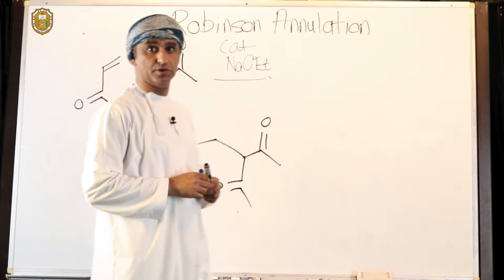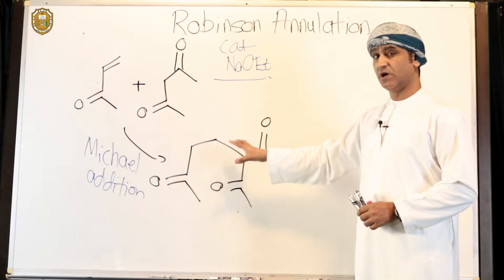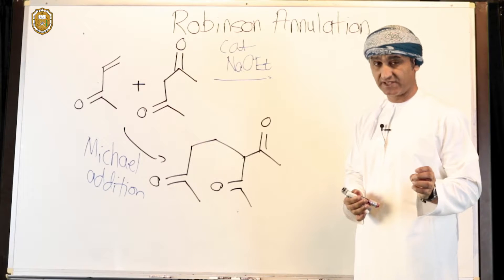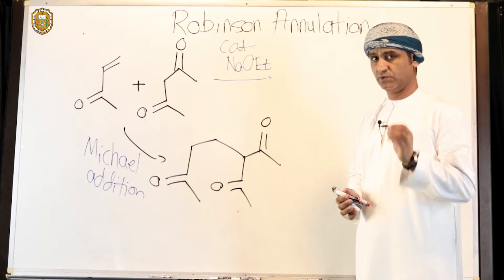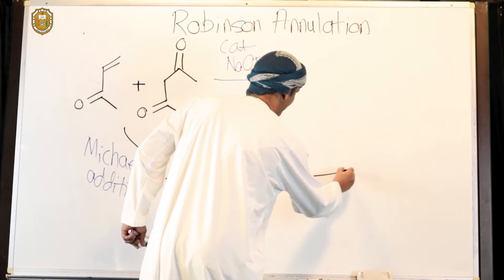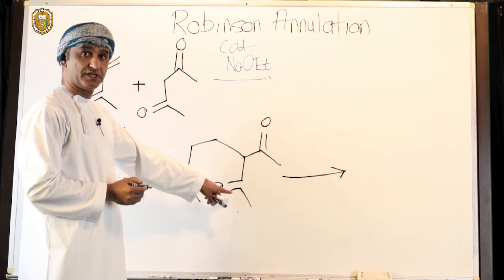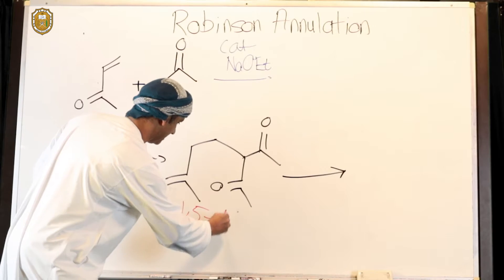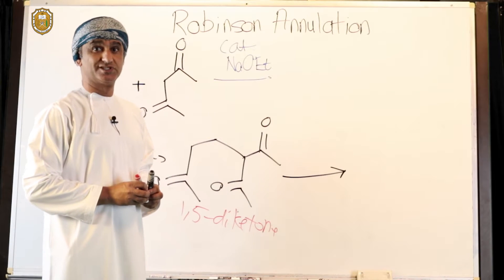So, when the 1,3-diketone is mixed with an alpha-beta unsaturated carbonyl compound in the presence of catalytic base, the 1,5-diketone is obtained. Remember, it's catalytic base, so the 1,5-diketone in the presence of catalytic base will undergo intramolecular aldol reaction — we have learned that before. An enolate forms here, which then attacks the other ketone. This is a 1,5-dicarbonyl compound, and 1,5-diketones in the presence of catalytic base undergo intramolecular aldol reaction.